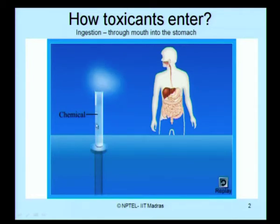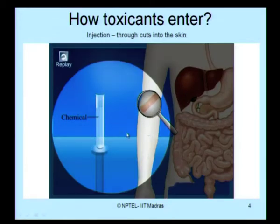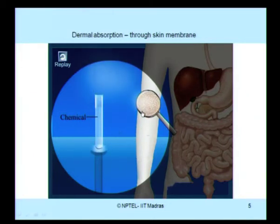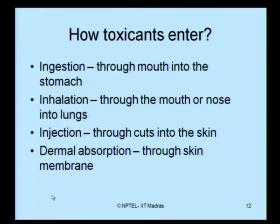There are four ways by which toxicants can enter the human body. First, a chemical can enter through the mouth into the stomach — this is ingestion. Second, through the mouth or nose into the lungs — this is inhalation. Third, through cuts in the skin. Fourth, through the skin membrane itself — this is dermal absorption. These are the four methods by which toxicants can penetrate the human body.